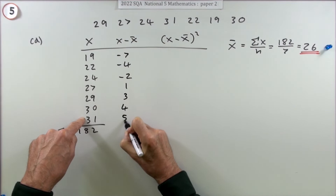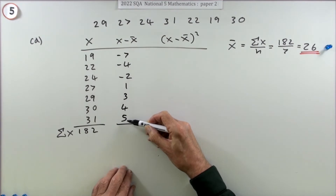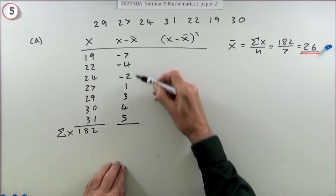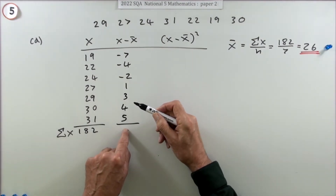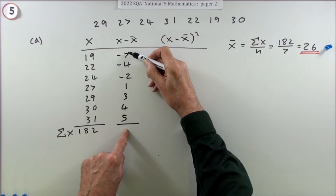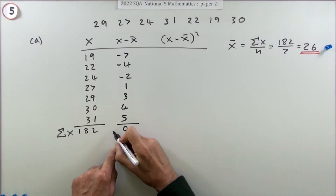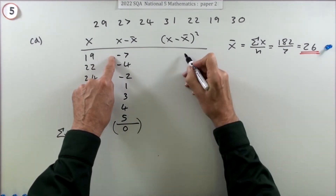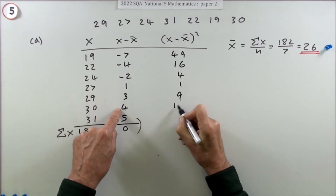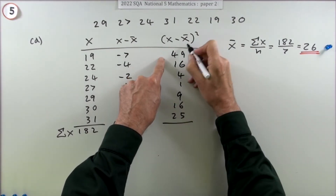A handy check: the differences should add up to zero. The negatives sum to -13 and the positives sum to +13, so they do come to zero. You don't need to show that - it's just a check. Now square each difference: 49, 16, 4, 1, 9, 16, and 25.